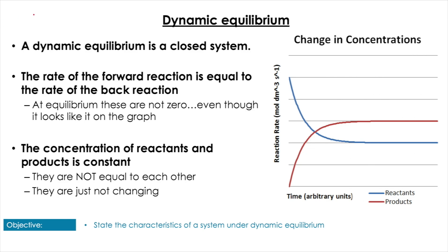Let's look at the criteria a system needs to be at dynamic equilibrium. There are three criteria. First, the system must be closed — nothing can come in or out, otherwise it's going to be disrupted. Second, the rate of the forward reaction equals the rate of the backwards reaction. It's important to remember this is not zero; the reactions have not stopped, it just means both directions are occurring at the same rate.